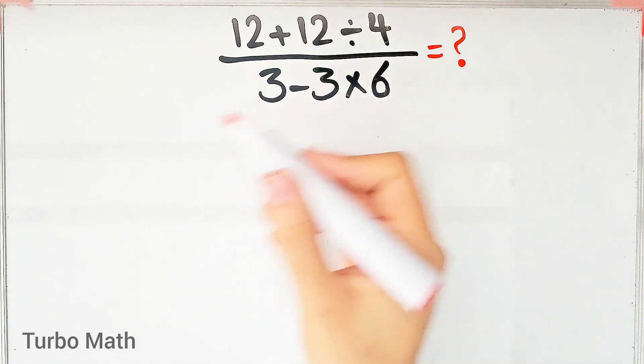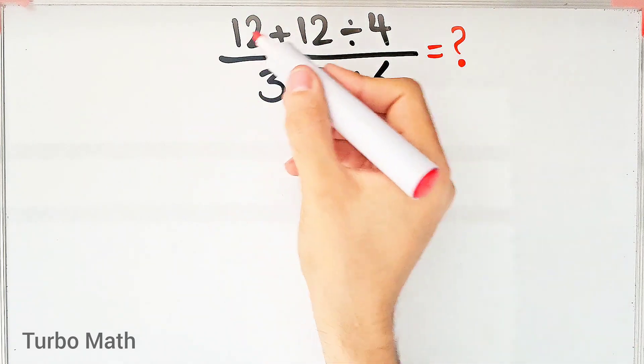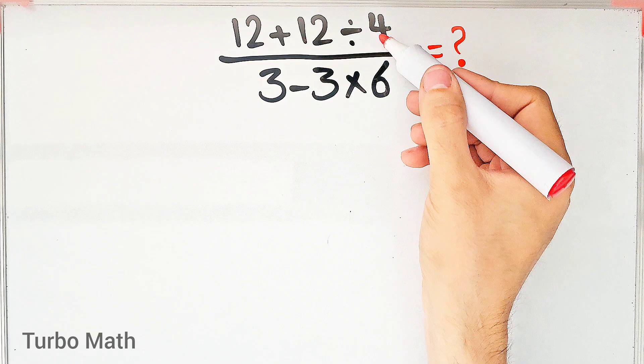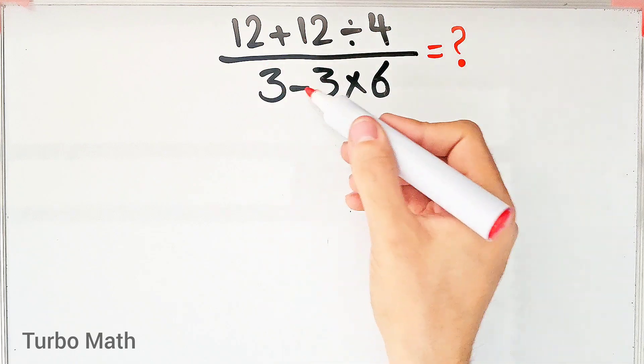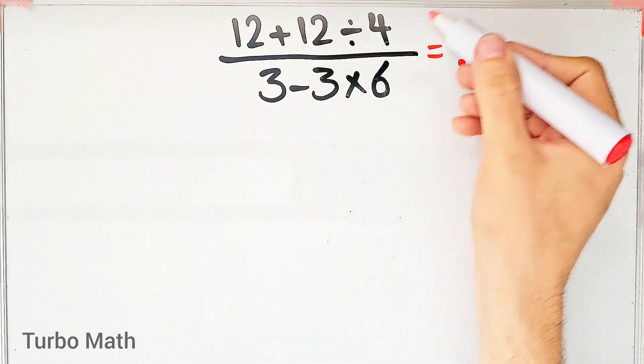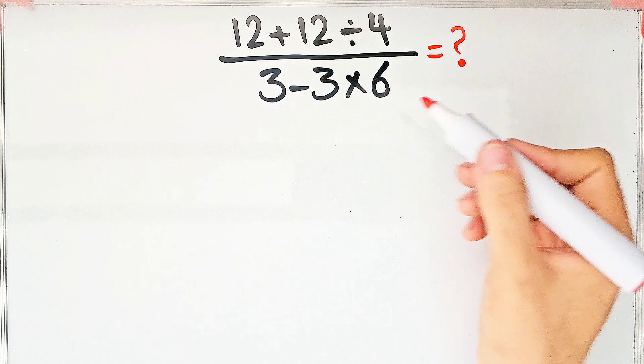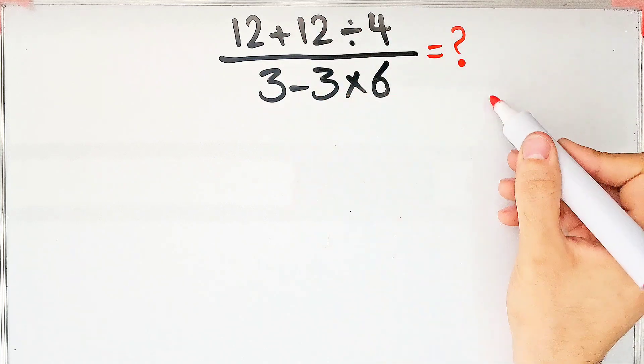Hi friends, welcome to Turbo Math channel. The problem is: (12+12÷4)÷(3-3×6). What is the answer to this question? Can you solve it? To solve this question, we need to follow the PEMDAS rule.